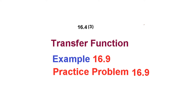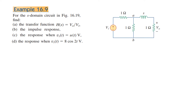This is another video on transfer functions. Here we'll be discussing example 16.9 and we'll solve practice problem 16.9. For example 16.9, this is the circuit and we have to find four parameters: the transfer function H(S) = V_out/V_in, the impulse response, and two more outputs for two different inputs. Let's proceed — the first part is the transfer function.